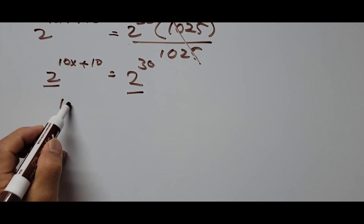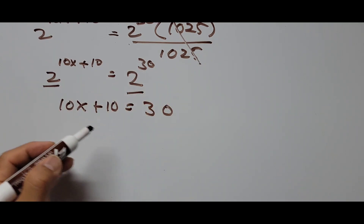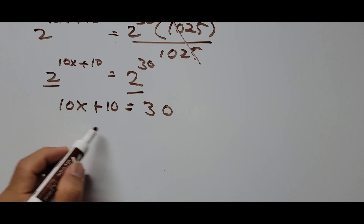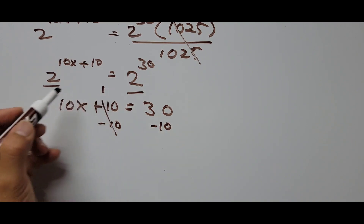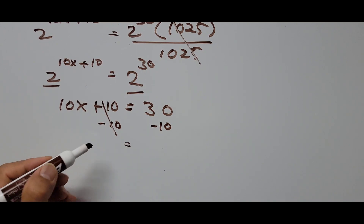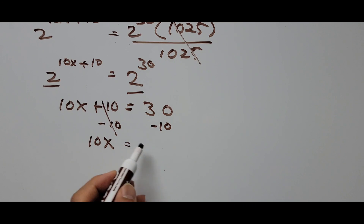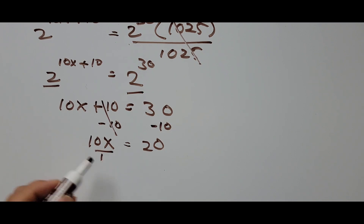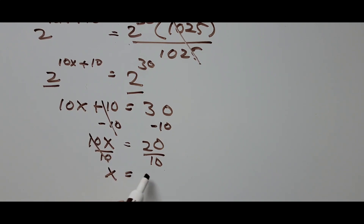So that gives us 10x plus 10 equals 30. Now we simplify: subtracting 10 from both sides, those cancel, leaving 10x equals 30 minus 10, which is 20. Dividing both sides by 10, we get x equals 20 divided by 10, which is 2. That is our final answer.